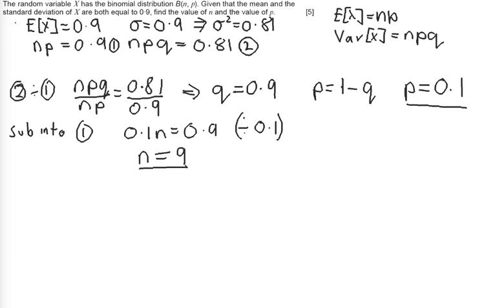So how do I get my marks on this question? Your first marks are given for these two statements here, the two equations that you've set up. You get a statement mark, so that's a b1, for stating that np is equal to 0.9. You also get a statement mark for the second equation, b1, for npq equals to 0.81. So you can give yourself a mark for each of them.